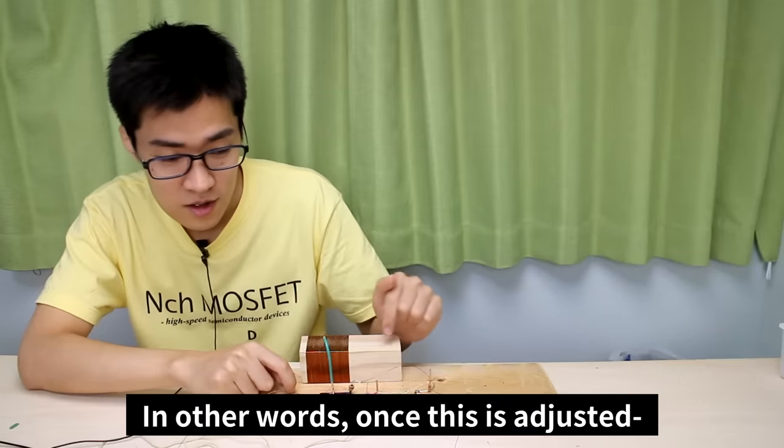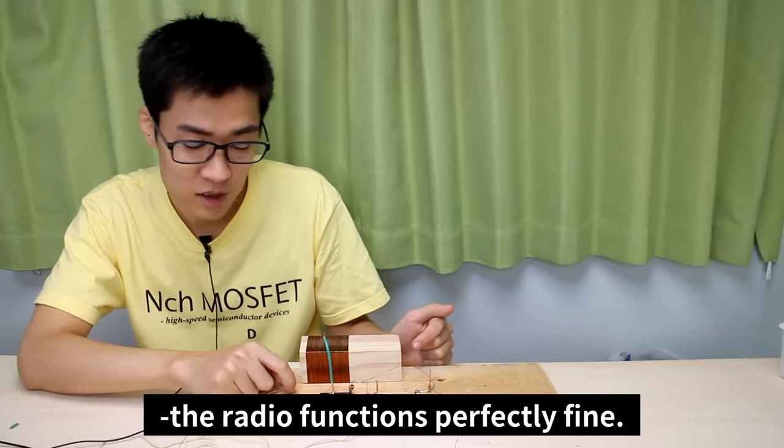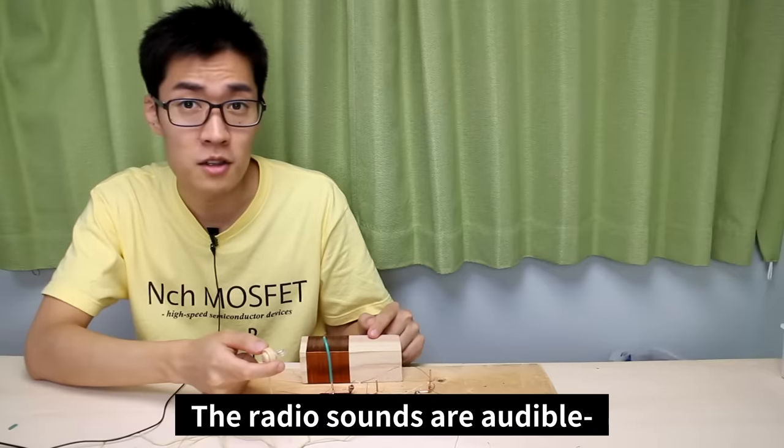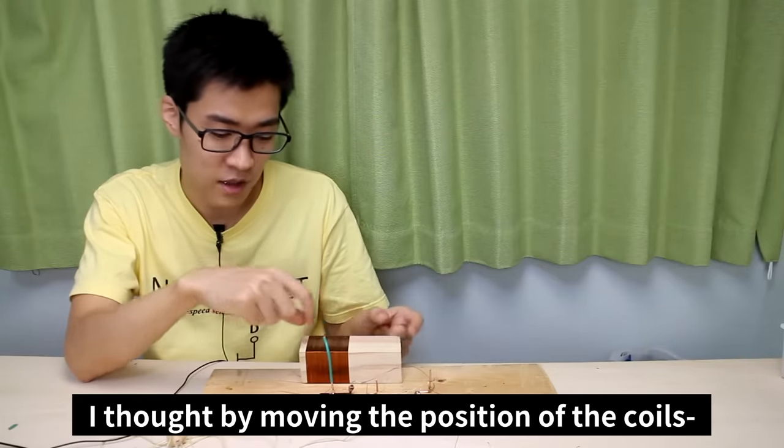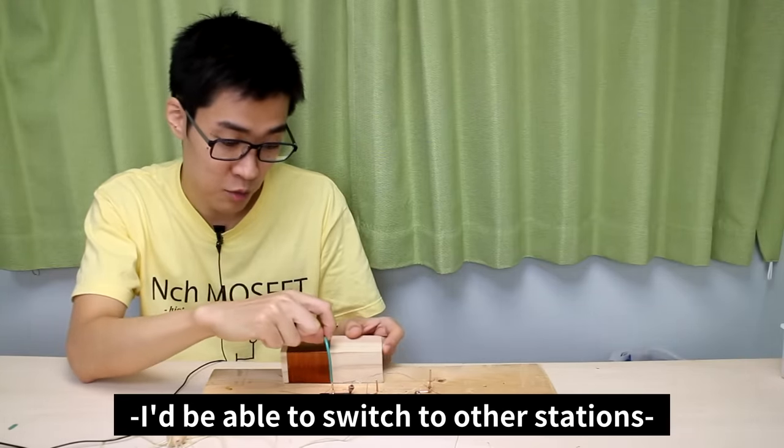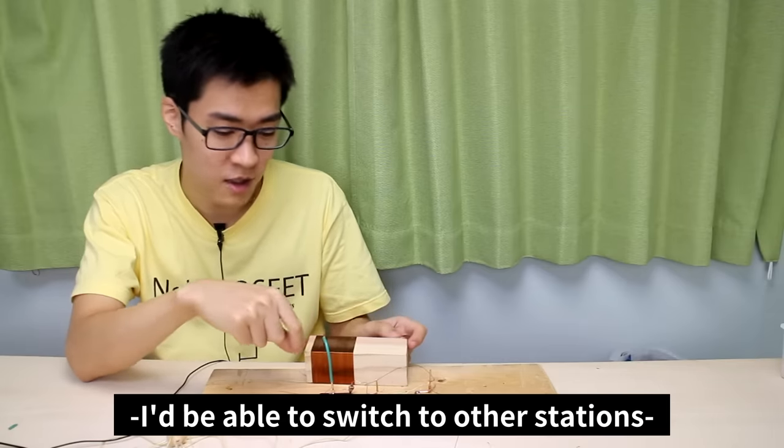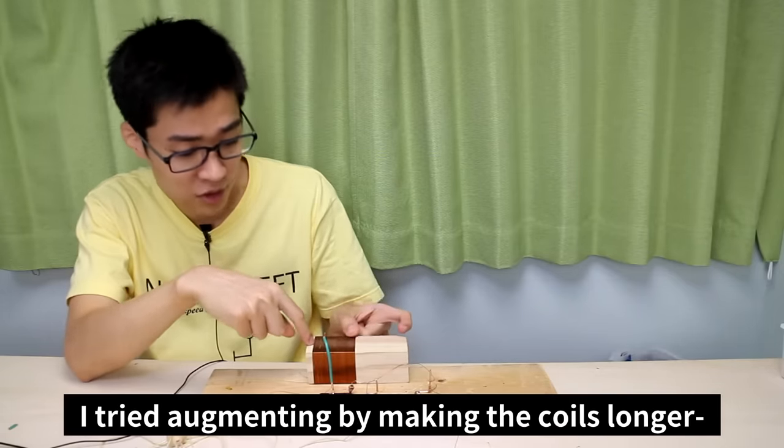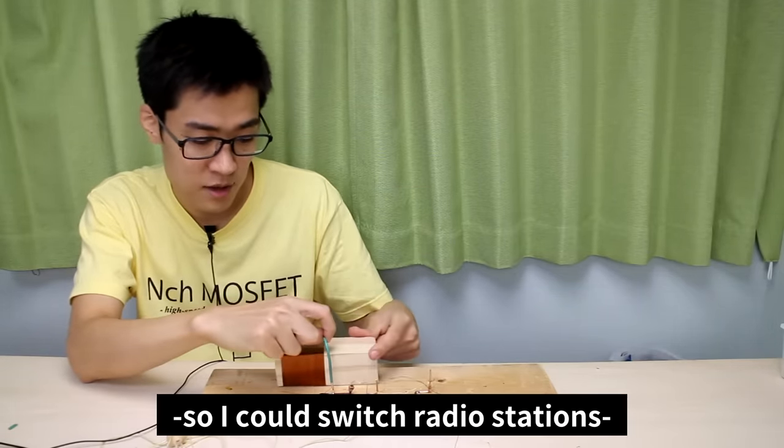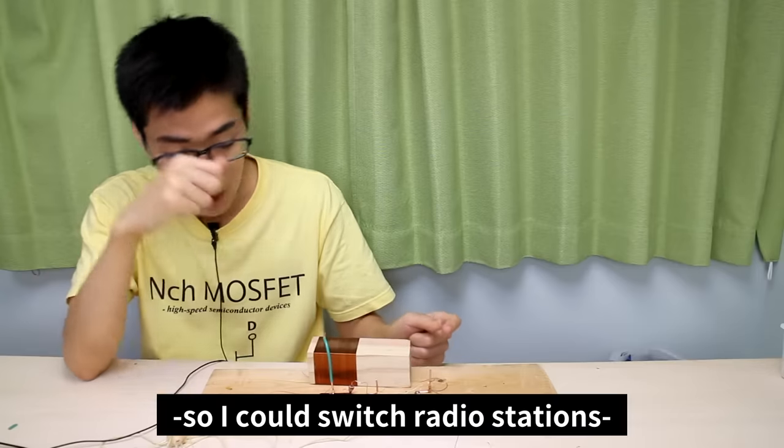In other words, once this is adjusted, the radio functions perfectly fine. The radio sounds are audible as long as it's quiet around. I thought by moving the position of the coils around I'd be able to switch to other stations, but it didn't work. I tried augmenting by making the coils longer so I had more space to switch radio stations, but it didn't work that easily.